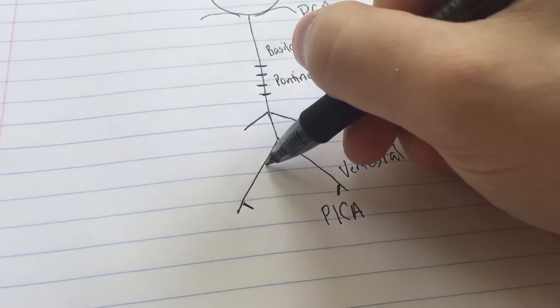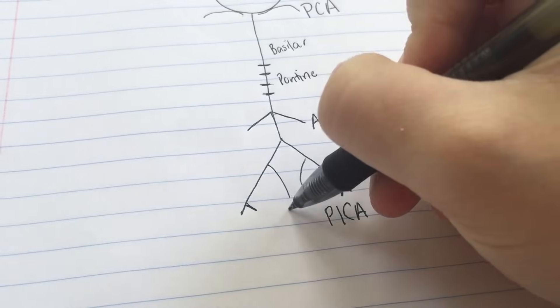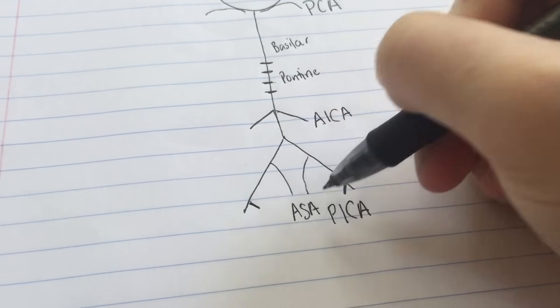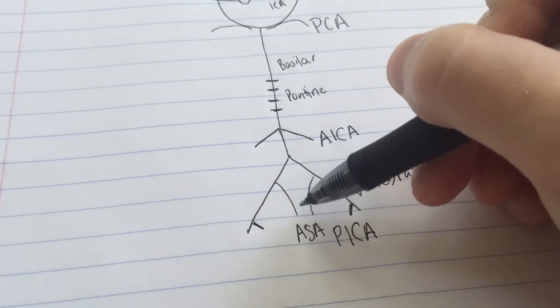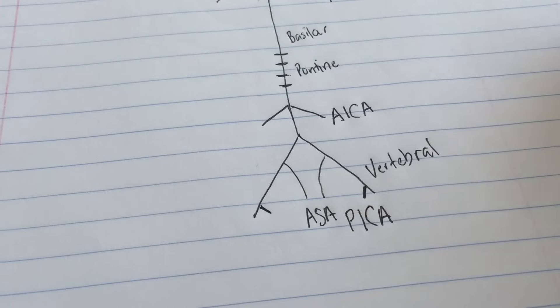The other one comes down just like that. This is the anterior spinal artery or the ASA. Poop would come right out of its ass or right out of its ASA.